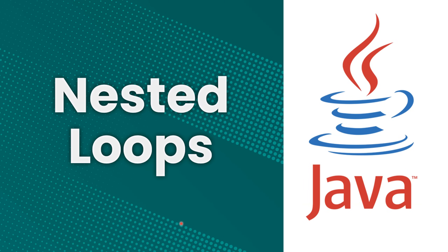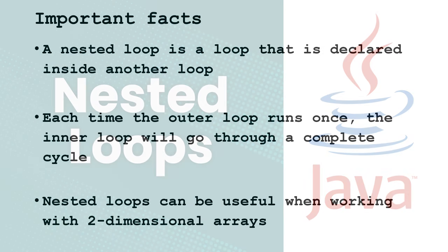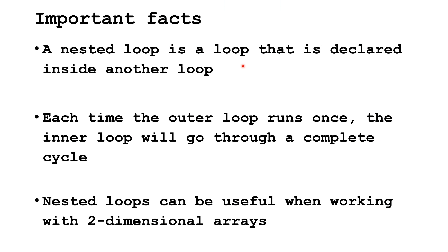In this section, we're going to learn about nested loops. A nested loop is a loop declared inside another loop — it could be a for loop, a while loop, or a do-while loop; it doesn't matter as long as it's a loop inside a loop. Each time the outer loop runs once, the inner loop will go through a complete cycle. Nested loops can be useful when working with two-dimensional arrays.